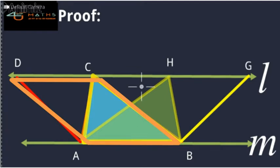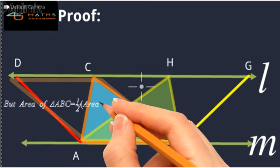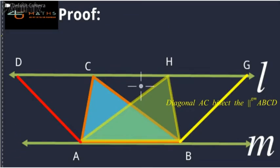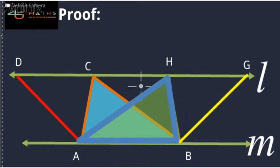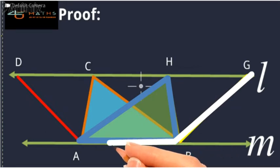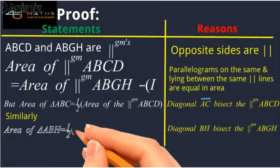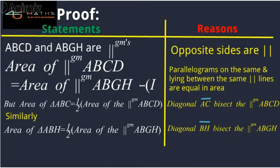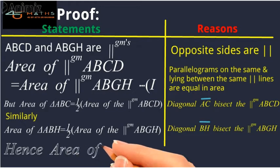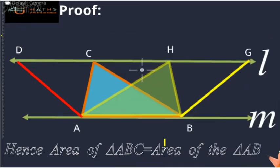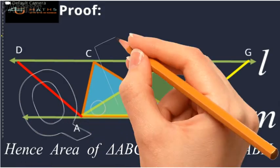Because the diagonal AC bisects the parallelogram. Similarly, the area of triangle ABH is equal to half of the area of parallelogram ABGH, as diagonal BH bisects the parallelogram. Hence, since both parallelograms have the same area, from the transitive property we conclude that the area of triangle ABC is equal to the area of triangle ABH. And this is what we wanted to prove.